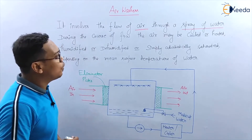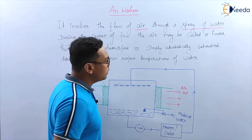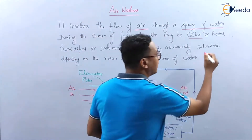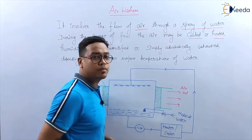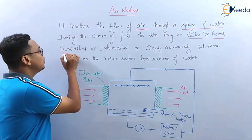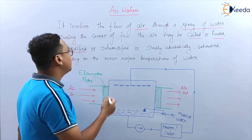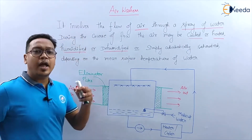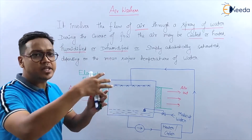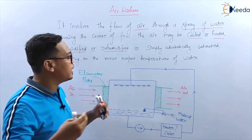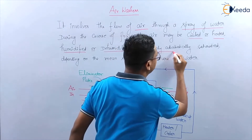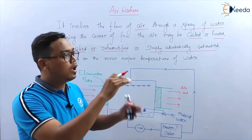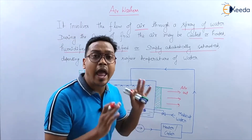During the course of flow, air may be cooled, humidified, or dehumidified. Humidification means adding of moisture; dehumidification means removing of moisture from the air. Simply adiabatic saturation means adding moisture up to the saturation level, adiabatically.